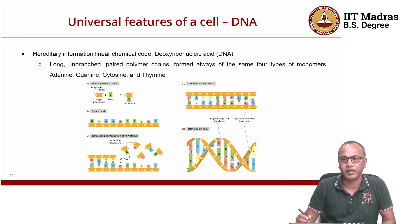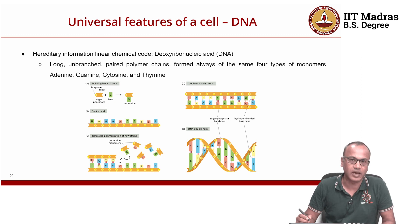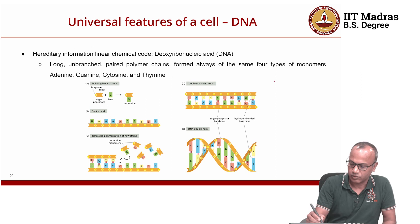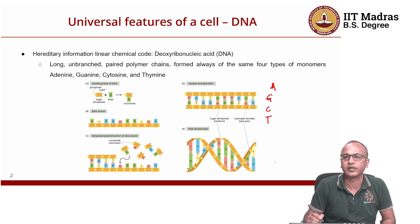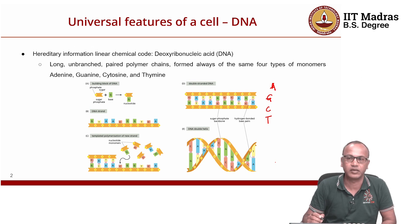DNA is a long polymer made up of four different kinds of monomers named adenine, guanine, cytosine, and thymine — abbreviated as A, G, C, and T. These four letters make up all DNA molecules, whether found in a bacterium or a human. That is why it is called a universal feature — it is a universal feature of all life forms on Earth.